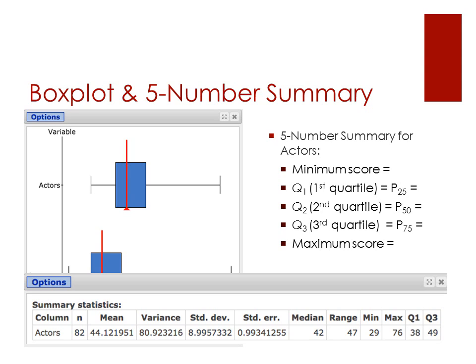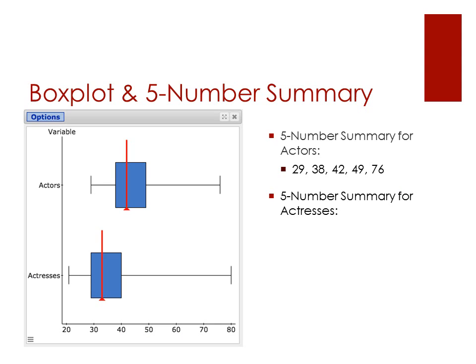Here are the values we get. We can see the minimum score is 29 and the maximum score is 76. The median — which is the same as P50 or the second quartile — is 42. You can also see Q1 and Q3. Applying all of these, the five-number summary for actors is: 29, 38, 42, 49, and 76.